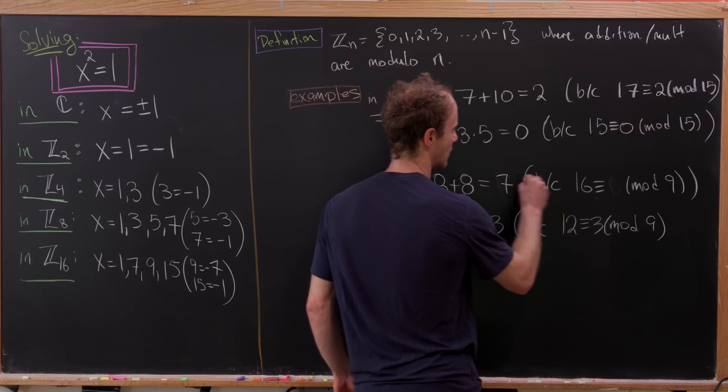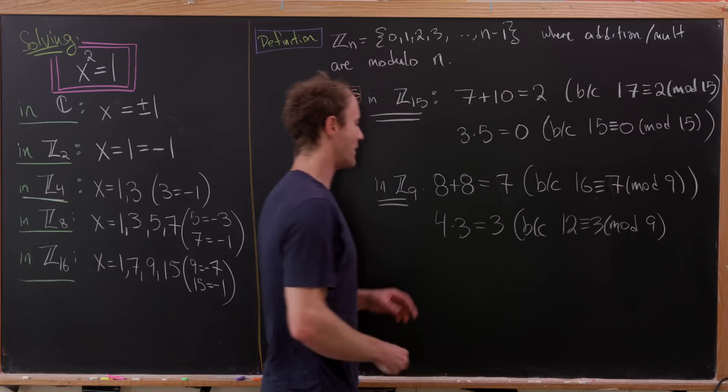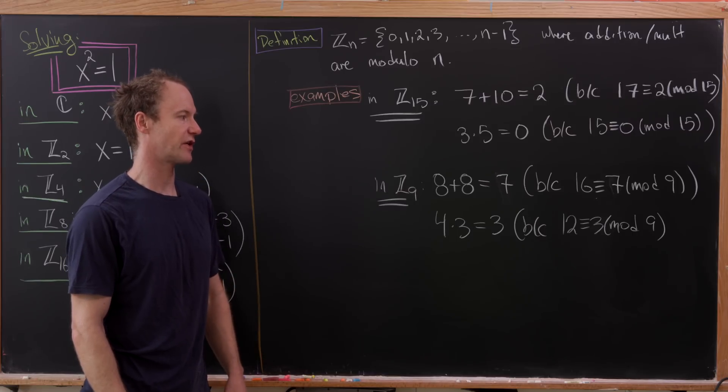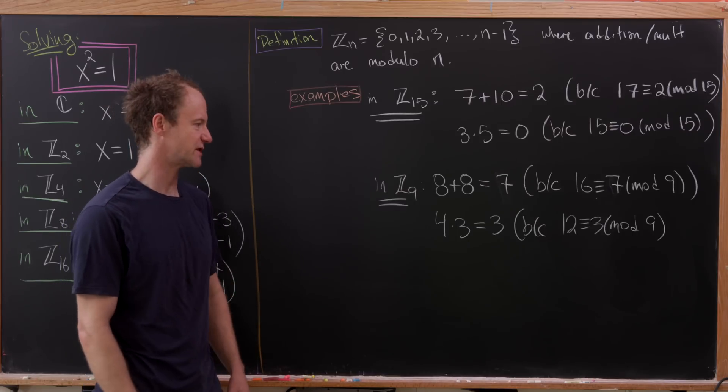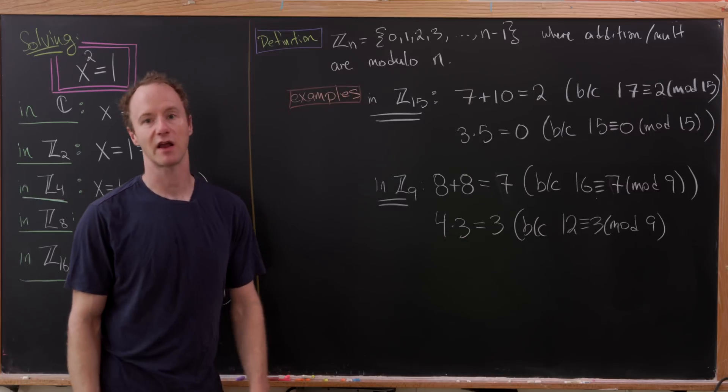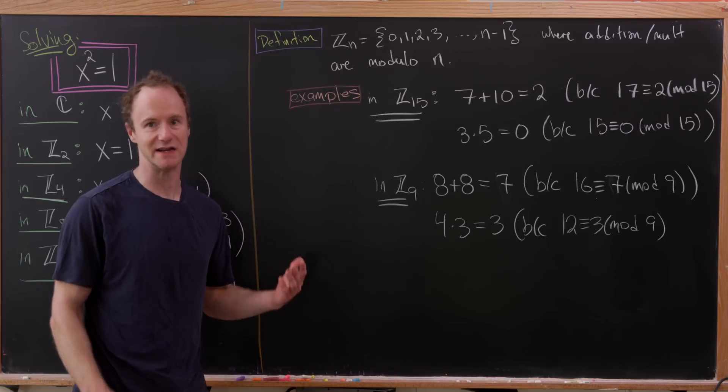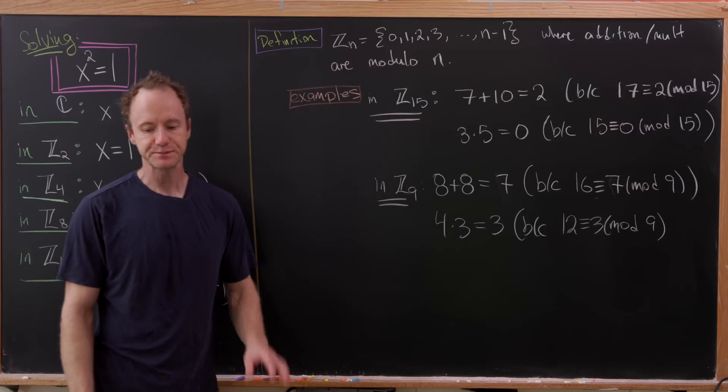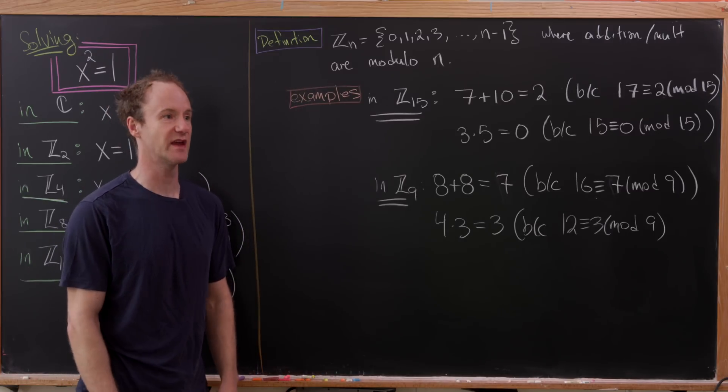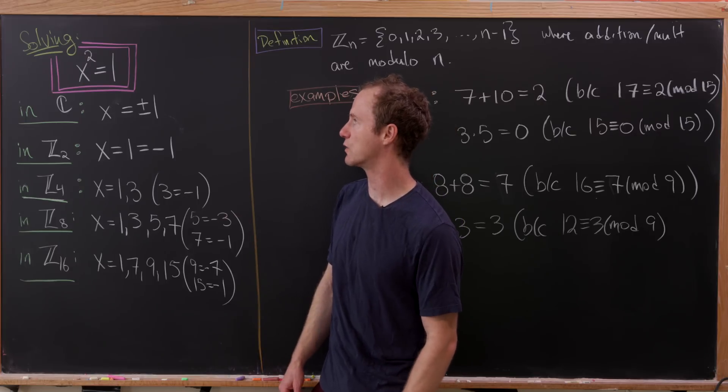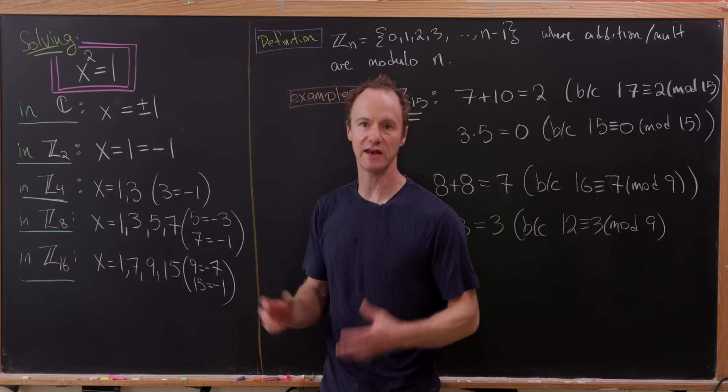Okay, well, what next? Well, maybe 4×3 in this setting is 3. That's because 12 is congruent to 3 mod 9. And I think this is also interesting as well because observe that we multiply 3 by something other than 1, the identity, if you will, and we get the number 3. Okay, so now that we've reviewed this, let's go ahead and look at solutions to our equation x² = 1 in different settings.